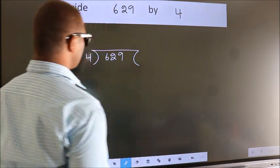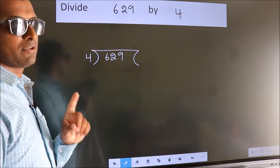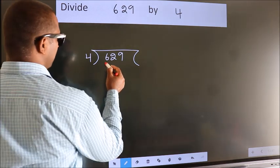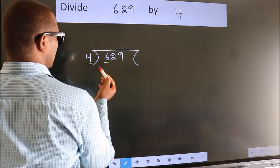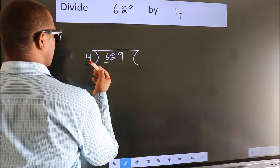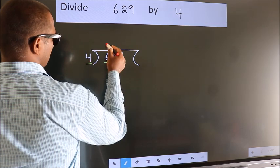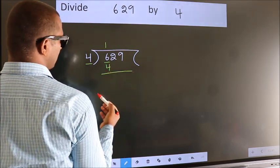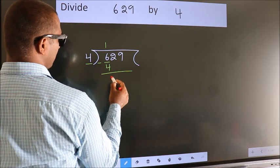This is your step 1. Next. Here we have 6, here 4. A number close to 6 in 4 table is 4 ones, 4. Now we should subtract. We get 2.